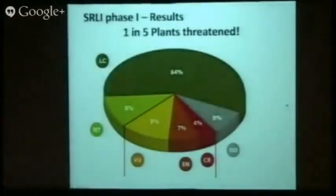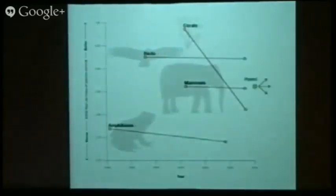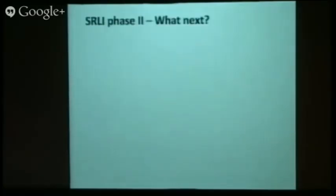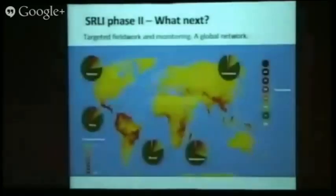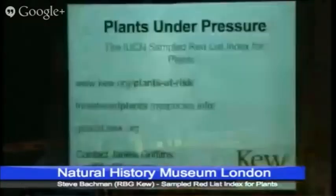This is what we found: one in five plants are threatened. We pulled all of those assessments together, and now we can put plants on that diagram. Where they go from now depends on our reassessment — we're going to go to places around the world and monitor these species to find out how they're changing over time. But now at least we've got that baseline in place.